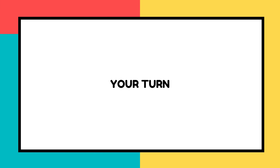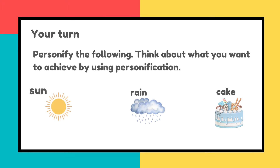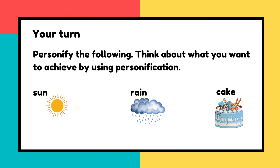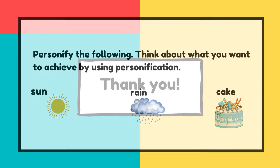Now that we've learned what personification is, it's your turn to try personifying the following: the sun, the rain, the cake. Think about why and the purpose of using personification for these objects. Thank you for listening. See you on another video from LearnOnTheGo — make sure you subscribe and turn on notifications so that you know when a new video is out.